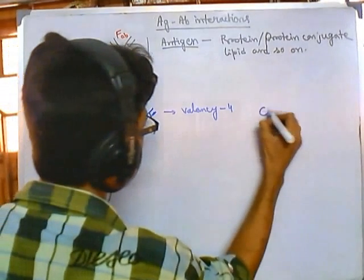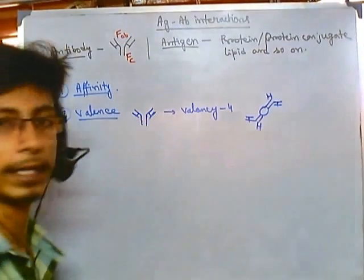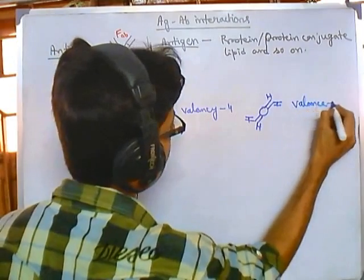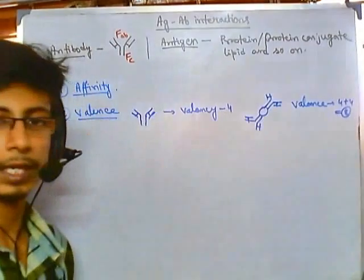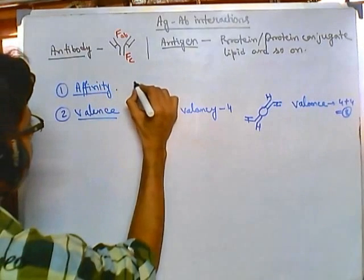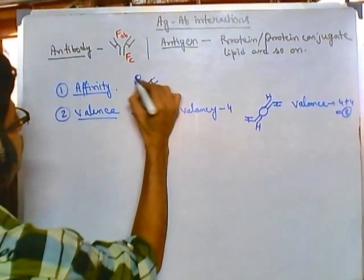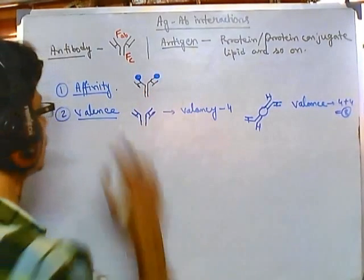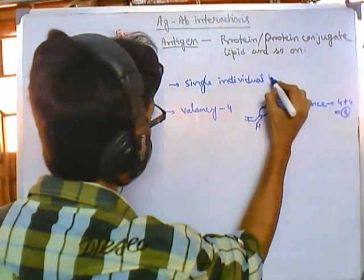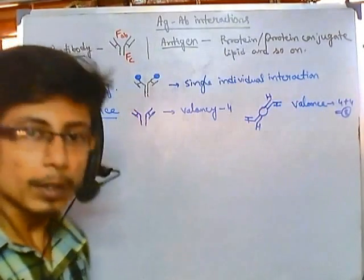Now if we get structures of antibodies that are multivalent in nature — suppose we have something bivalent, where two different antibodies come together, four attachment sites for each — the valency here would be four plus four equals eight. But most of the time when we are talking about affinity, we are simply talking about the single individual interaction of one antibody with one antigen. This is a simple single individual interaction between antigen and antibody.